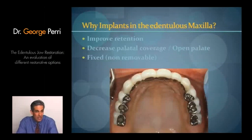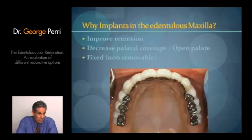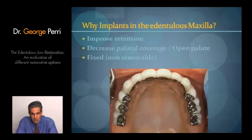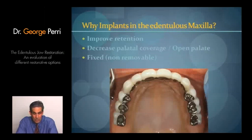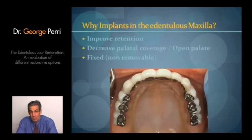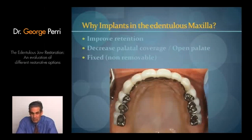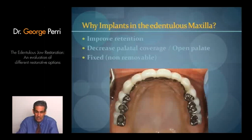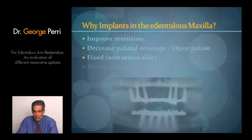I think the ultimate, in terms of most restorative dentists' minds and certainly most patients' minds, is having a fixed final result. That fixed could be porcelain fused to metal, or it could be a hybrid restoration of denture teeth, acrylic resin, and a metal framework. But is the concept of fixed always the best way to treat the patient? Is that always solving the patient's primary needs and desires? It might not. So we need to understand those limitations and treatment plan accordingly.